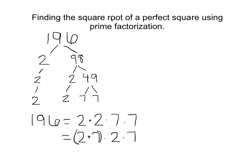So let's group these together. And 2 times 7 is 14, so I have 14 times 14. Look at that. I found two numbers when multiplied together give me 196.